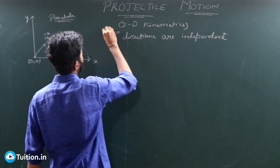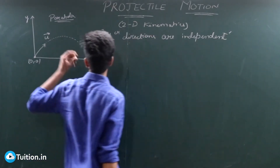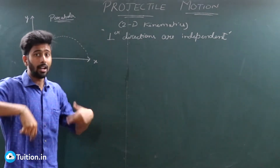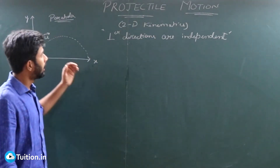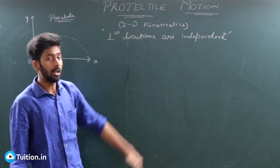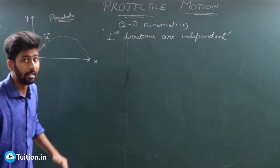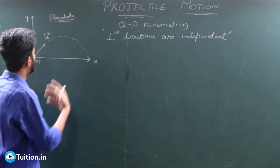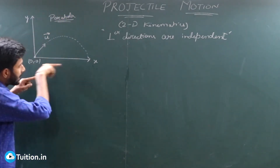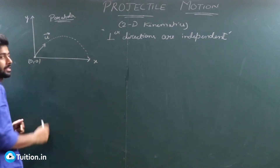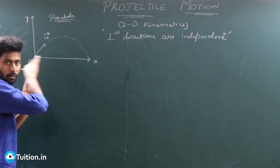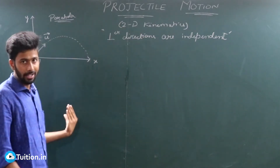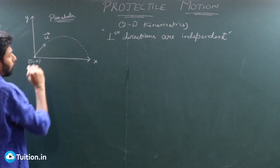If you remember this one line, you should be able to deal with this topic with much greater ease. Not just this topic — there are many topics in physics where the same concept applies: perpendicular directions are independent. What that means is: if I have two directions, the x-axis and y-axis, which are mutually perpendicular, what happens on the x-axis will have no effect on the y-axis, and vice versa.